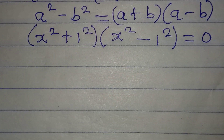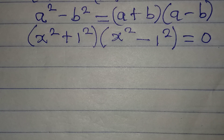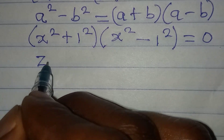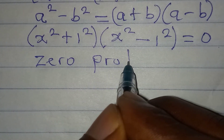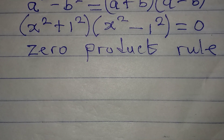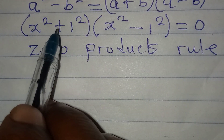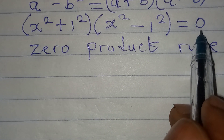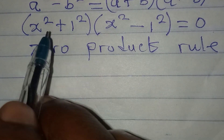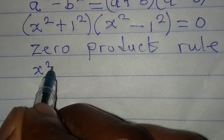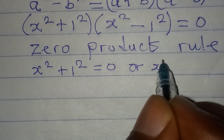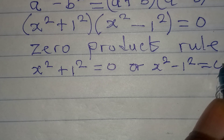I hope you understand this. If you're following, please subscribe to my channel for more of this. From here we can apply the zero product rule. That says if you have two factors multiplied together, one of them must be equal to 0 for the product to be 0, and which one is 0 we do not know. So we have to equate either of them to 0: x squared plus 1 squared equals 0, or x squared minus 1 squared equals 0.